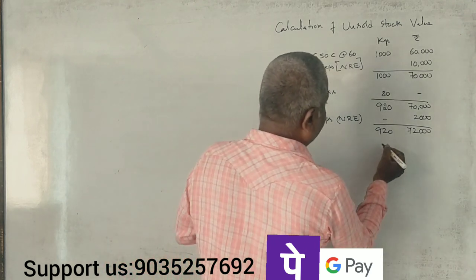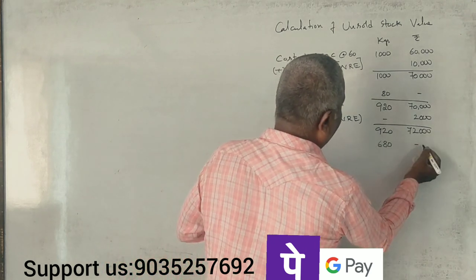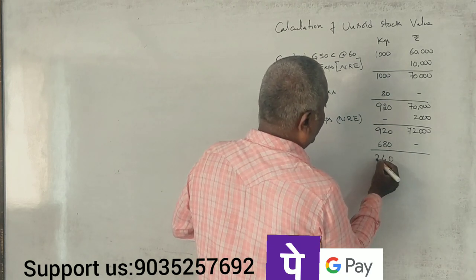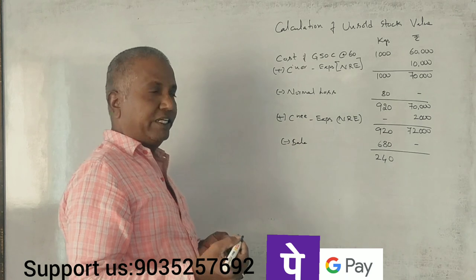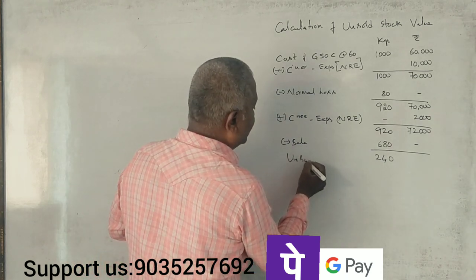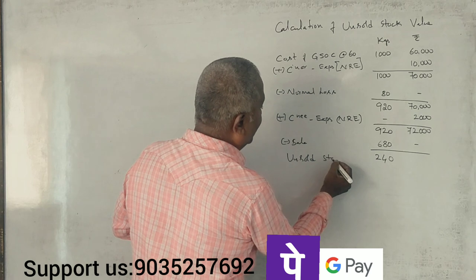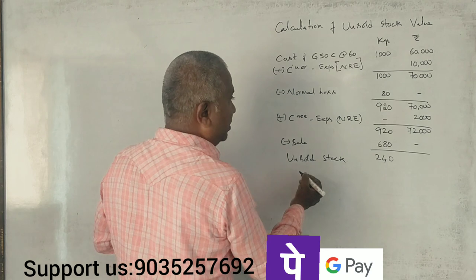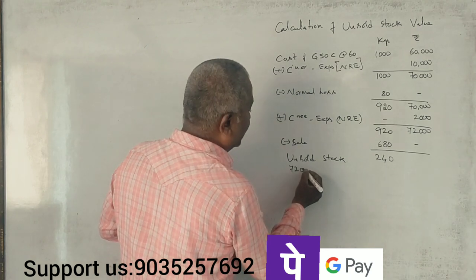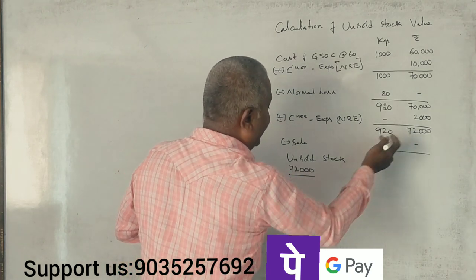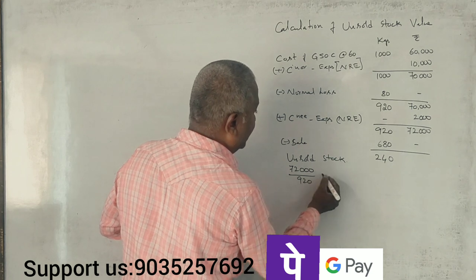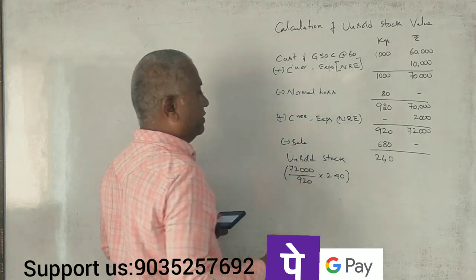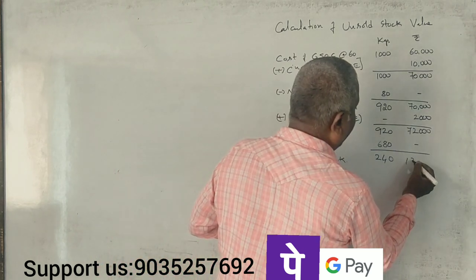Sold stock: 680 kgs. Total available was 920 kgs. Therefore, unsold stock is 240 units. The value of unsold stock is Rs. 18,782.